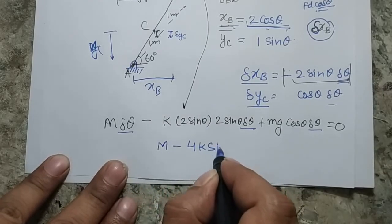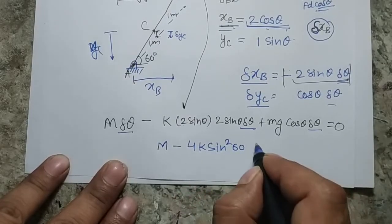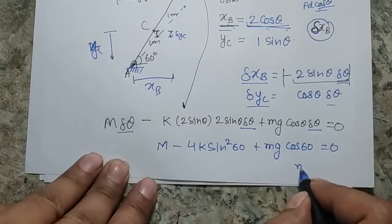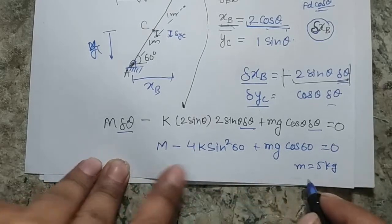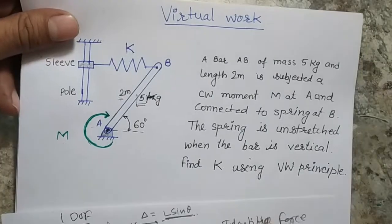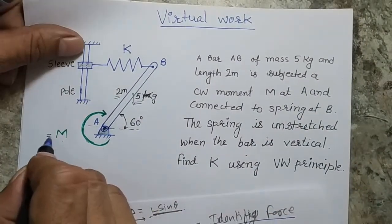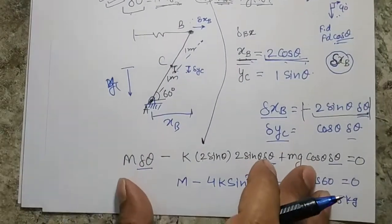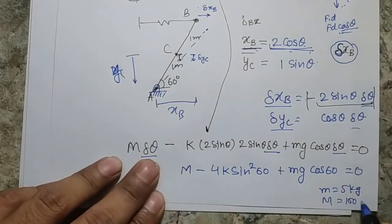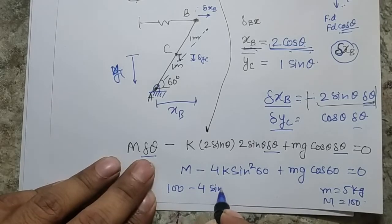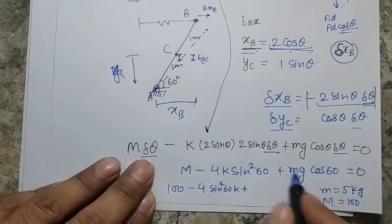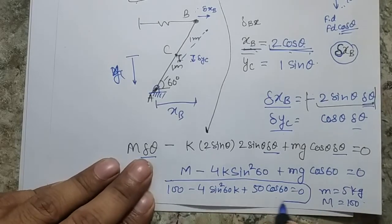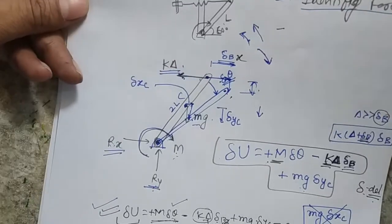Substituting values: M = 100 N·m, mass = 5 kg, g = 10 m/s², the equation becomes: 100 − 4K sin²60° + 50 cos 60° = 0. Solving this gives the value of K, the spring constant, for the given problem.